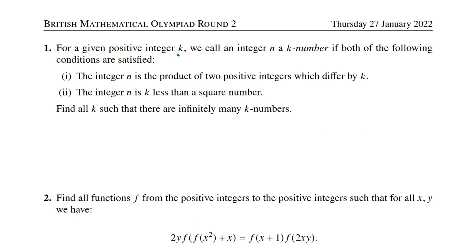For a given positive integer k, we call an integer n a k-number if both of the following conditions are satisfied. First condition: the integer n is a product of two positive integers which differ by k. Second condition: the integer n is k less than a square number. Find all k such that there are infinitely many k-numbers.